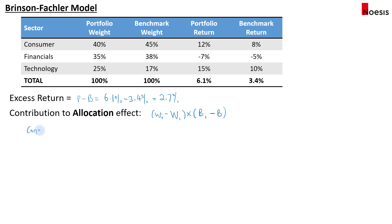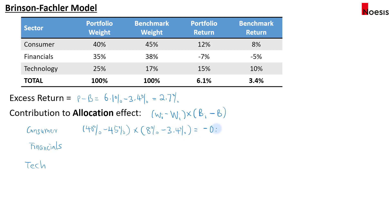For consumer, we take 40% minus the benchmark weight of 45%. The portfolio manager has underweighted consumer. The benchmark return for consumer is 8% minus 3.4% overall benchmark return, giving negative 0.23%. The manager made a wrong decision by underweighting the consumer sector when it is performing better than the rest of the sectors.